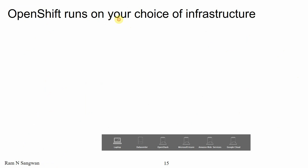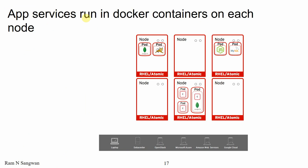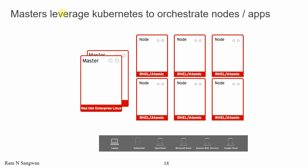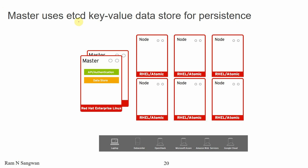OpenShift runs on your choice of infrastructure — laptop, data center, OpenStack, Azure, Amazon Web Services, or Google Cloud. Nodes are instances of Red Hat Enterprise Linux where applications run. App services run in Docker containers on each node. The master leverages Kubernetes to orchestrate nodes and apps. We have multiple masters for high availability. Masters provide an authenticated API for users and clients. The master uses etcd — a key-value pair data store — for persistent, distributed storage across multiple nodes.